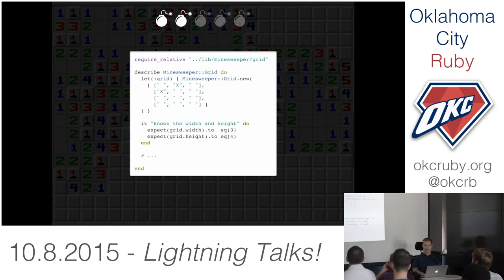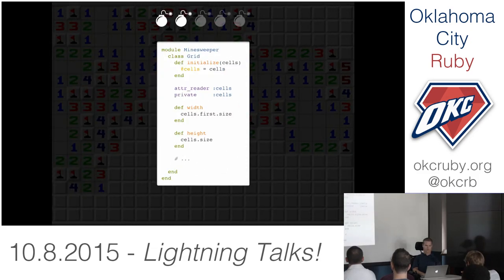This is the smallest step I can think to take, and that was something we had a little trouble with in the dojo. I think we were trying to take two larger steps at a time, and then it's easier to get lost. So we just look for the width and height of the grid. The size of the outer array is the height, and the size of any of the inner arrays is the length.